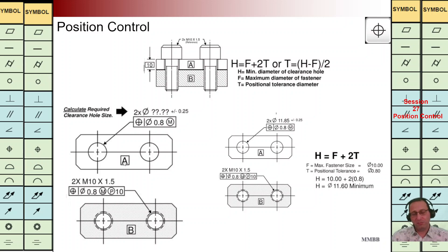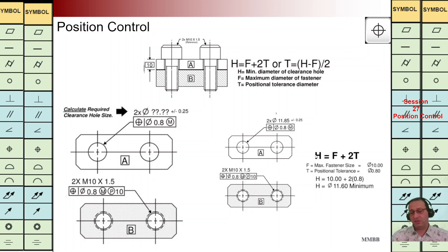For parts A and B we can see we are going to have the same tolerance zone — it is 0.8. For part B, the projected tolerance zone is considered, that's why in the formula we don't need to consider the effect of not having a projected TZ. The formula is: H equals diameter of fastener plus T1 plus T2.